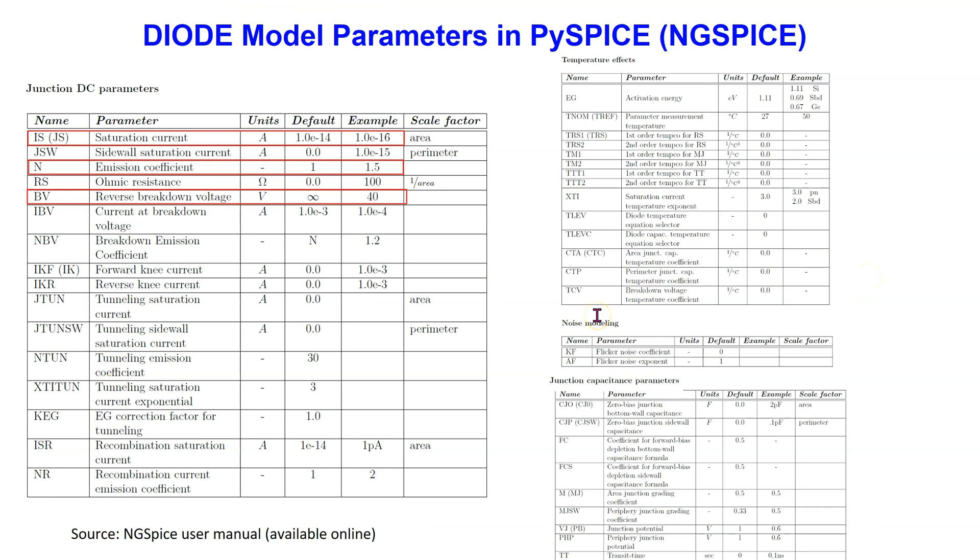This slide shows the diode SPICE model parameters in PSpice, which uses NGSpice as the underlying simulator. Note that over 40 parameters make up the complete diode SPICE model. These parameters can be divided into four main categories: Junction DC parameters, junction capacitance parameters, noise parameters, and temperature parameters.